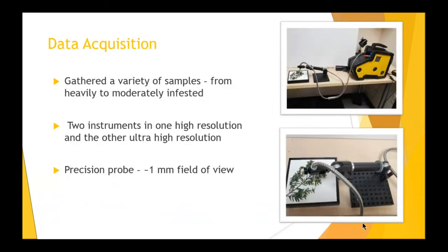In terms of data acquisition, we went out to the site in May of 2021 when the ecologist informed us that the woolly masses were now present on the hemlock trees. We gathered samples from a series of infested trees from moderate to heavily infested, and even a nearby healthy hemlock. I took these samples back to our facility to begin analysis, but for the purpose of this analysis I'll focus on one instrument data set.